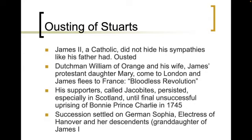Now of course James II, who was Catholic, did not hide his sympathies like his father had, so we're going to see him being ousted and the Stuart line is essentially gone. After that we have Dutchman William of Orange and his wife — James's Protestant daughter Mary — come to London, and James flees to France in the bloodless revolution. The Catholics are no longer in charge of England and we start seeing a Protestant Reformation. Now James's supporters, called the Jacobites, persisted especially in Scotland until a final unsuccessful uprising by Bonnie Prince Charlie in 1745.